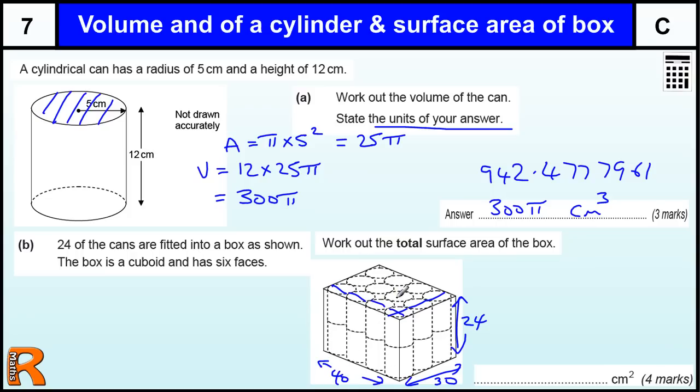Ok, so to work out the surface area of this box, we need to work out the area of each side and add it up. Now each side has a pair on the other side, so we can just work out one and double it.